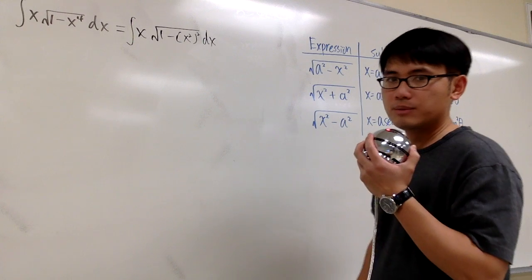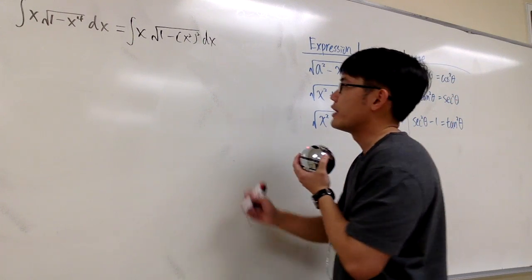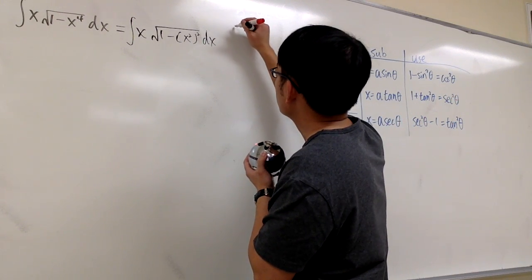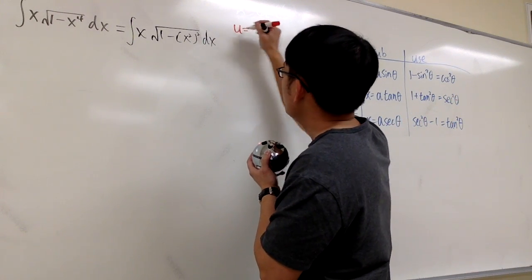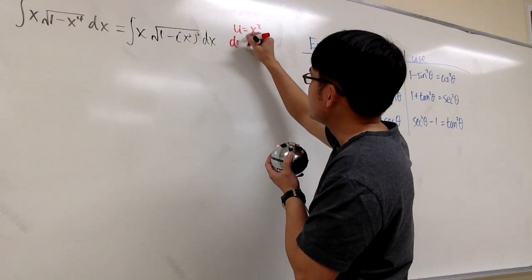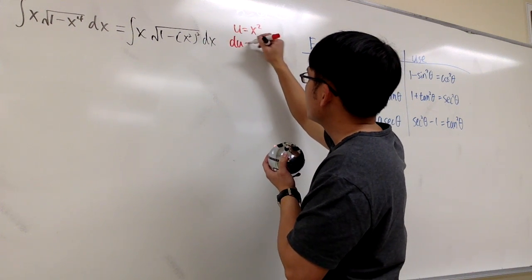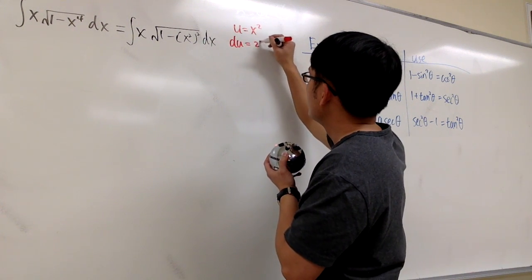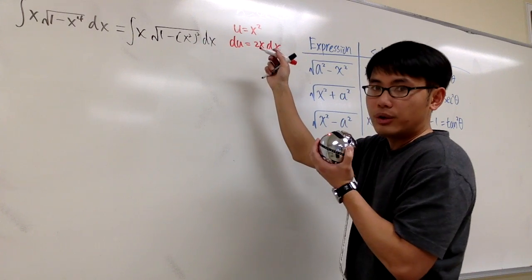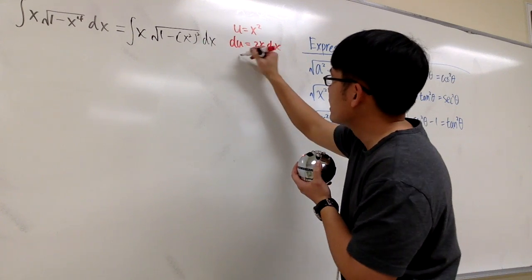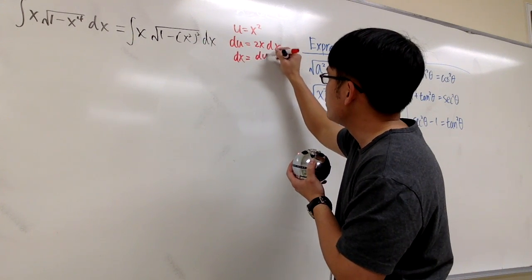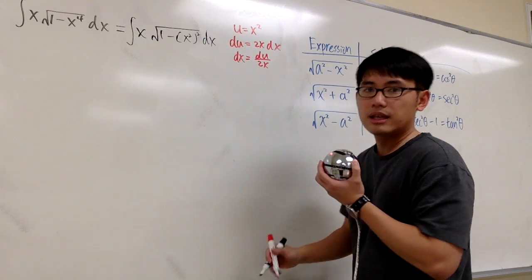This way I can do a small u-substitution. Let u equal the inside, which is x squared. Differentiate both sides: du will be 2x dx, and dividing both sides by 2x, we get dx equals du over 2x.